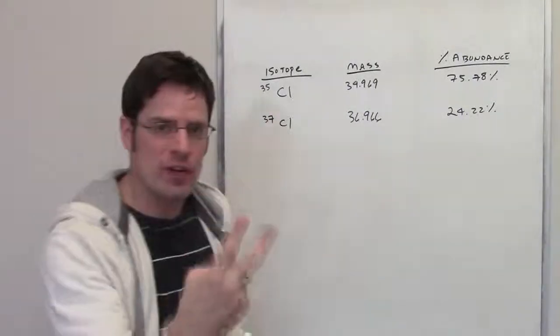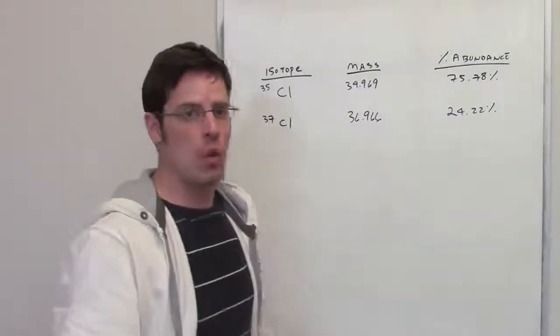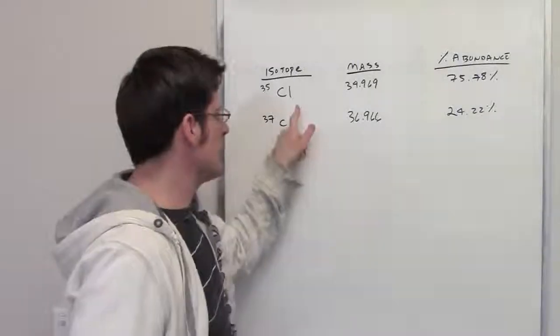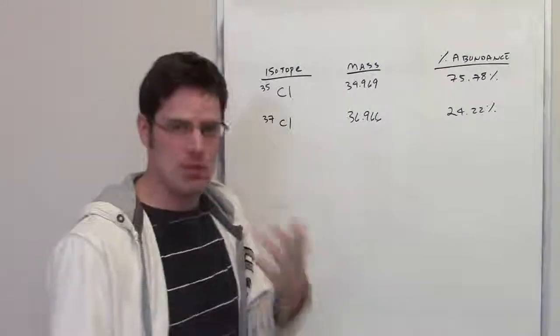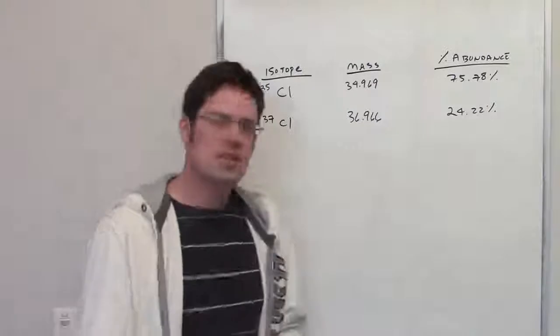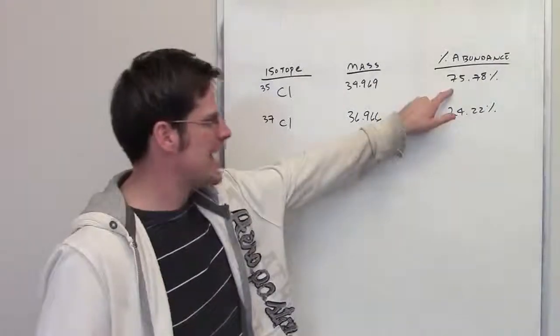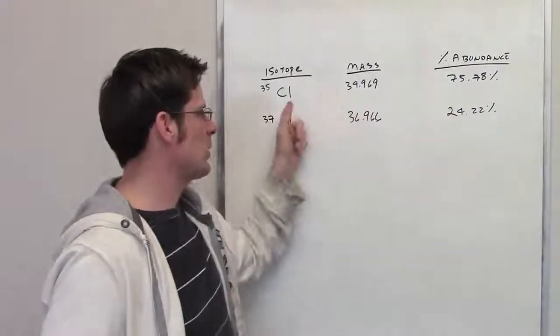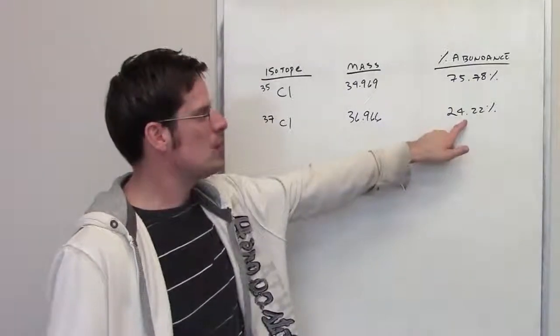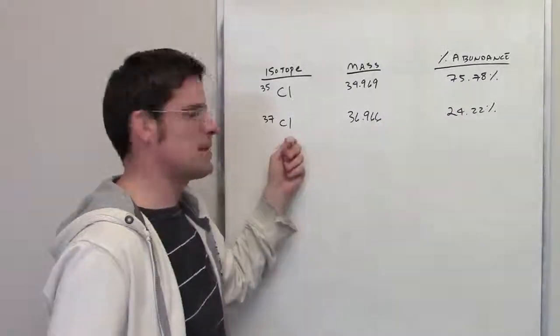In nature, there are two different isotopes that exist of chlorine. One is chlorine-35 and one is chlorine-37. Chlorine-35 has this mass in amu or in grams per mole. Chlorine-37 has this mass in amu. 75.78% of all chlorines happen to be chlorine-35s, at least on Earth and maybe throughout the universe, I don't know. And 24.22% of all chlorines happen to be chlorine-37.